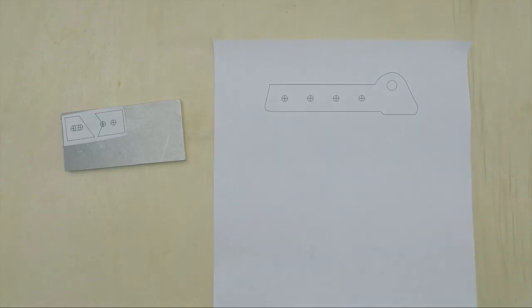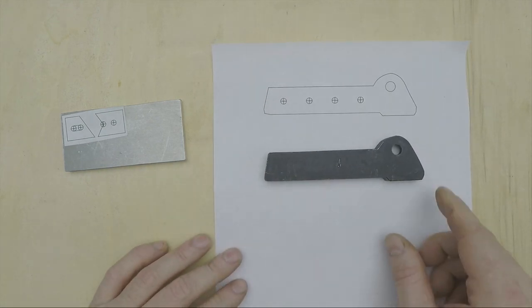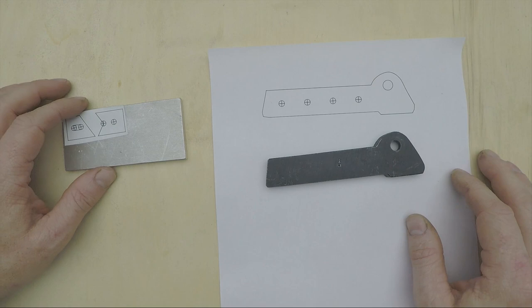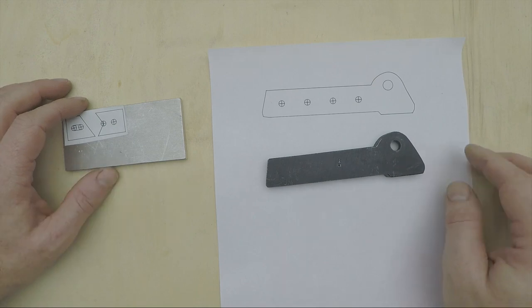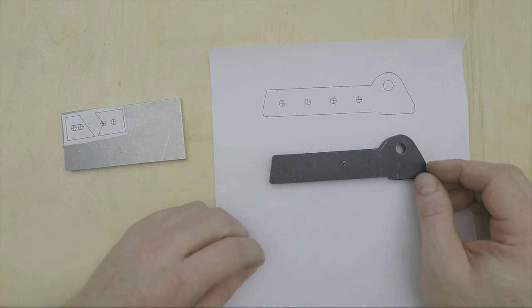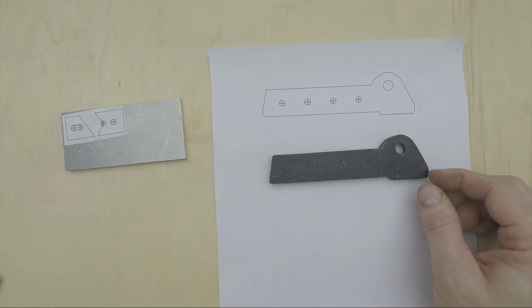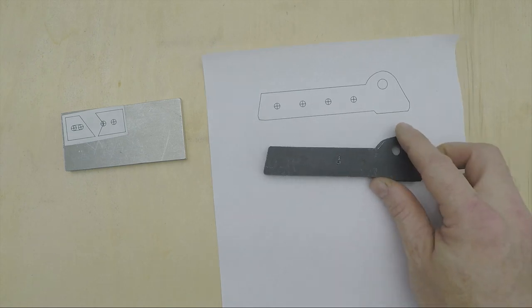But for situations where I'm modifying an existing component like this lathe parting tool holder, the mailing label trick doesn't work so well, because if you don't get the template lined up exactly right on the first attempt, it's basically ruined. You have to scrape it off, print and cut a whole new template, and try again.